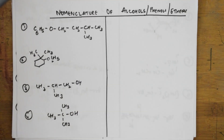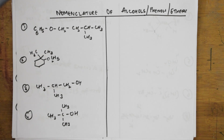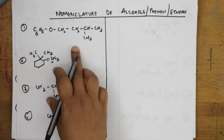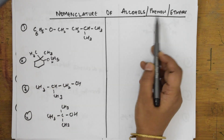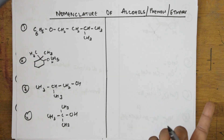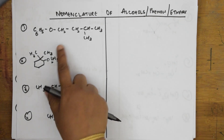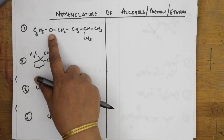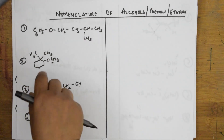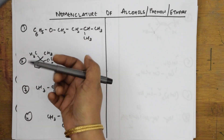Now let's cover the nomenclature of alcohols, phenols, and ethers. For alcohols, the suffix added is '-ol'. Ethers are denoted by a double-bonded oxygen. Alcohols are indicated by -OH, and phenol is C₆H₅OH. When naming, always identify the parent chain first, then deal with substituents.